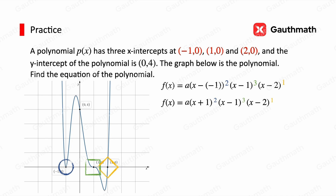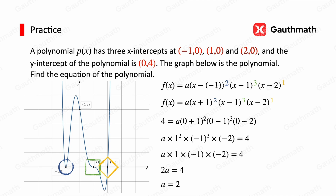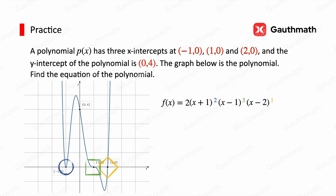So the function is f(x) equals a times (x plus 1) squared times (x minus 1) cubed times (x minus 2). To find a, we use the y-intercept (0, 4). Substituting x equals 0 and y equals 4: 4 equals a times (0 + 1) squared times (0 - 1) cubed times (0 - 2). Solving the equation gives a equals 2. So the polynomial is f(x) equals 2(x plus 1) squared times (x minus 1) cubed times (x minus 2).